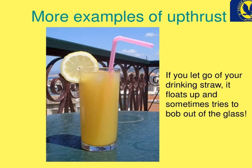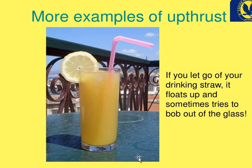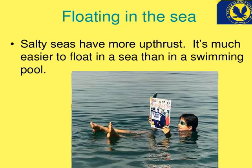Next, you can see more examples of up thrust. If you let go of your drinking straw, it floats up and sometimes tries to bob out of the glass — have you ever felt this? If you keep a straw in a glass, it comes upward. Why does it come up? Due to up thrust force — it is a force that pushes it upward. Sometimes the juice also comes out because the force moves it upward. The straw goes upward or comes above the glass due to up thrust force.